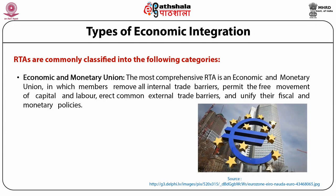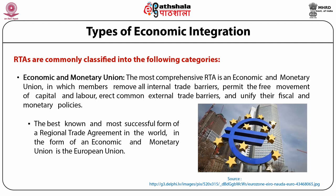The most comprehensive RTA is an Economic and Monetary Union, in which members remove all internal trade barriers, permit the free movement of capital and labor, erect common external trade barriers, and unify their fiscal and monetary policies. Member countries share a common currency and macroeconomic policies. The best known and most successful example is the European Union. Other Economic and Monetary Unions include the Western African Economic and Monetary Union, the Economic and Monetary Community of Central Africa, and the Economic Cooperation Organization.